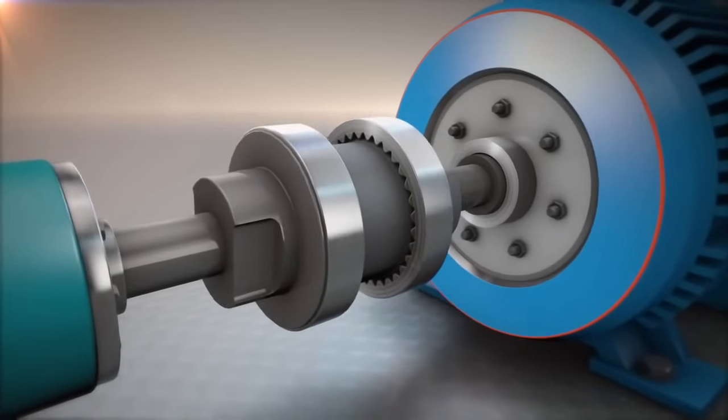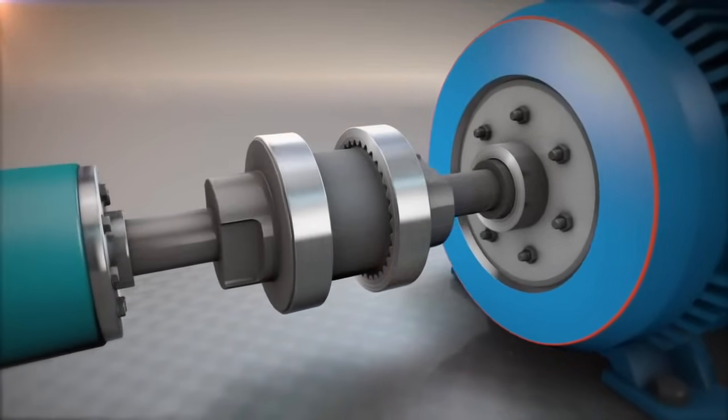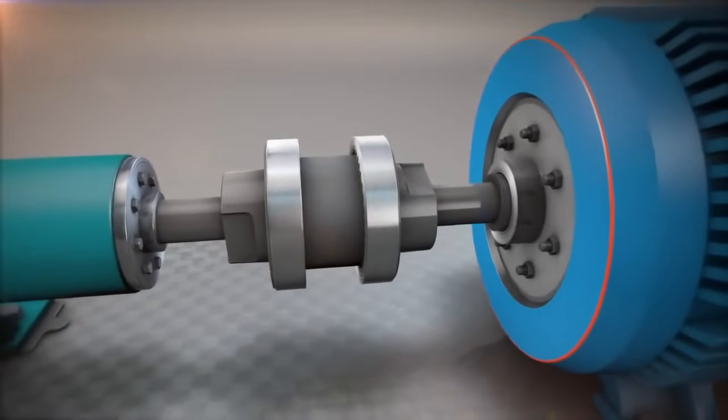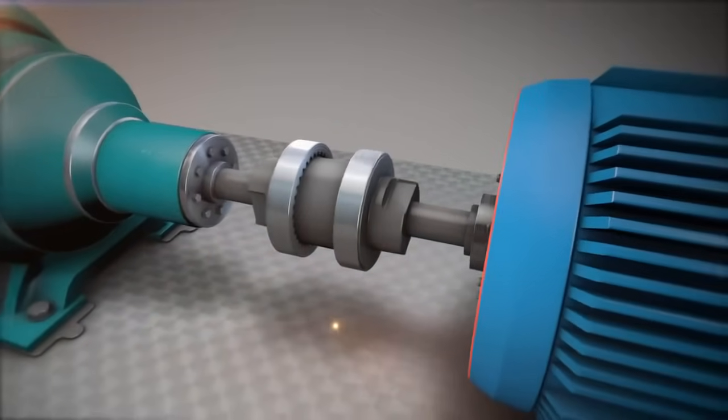In the real world, we aim to align the machines as collinear as possible, within tolerance, at the coupling or point of power transmission.